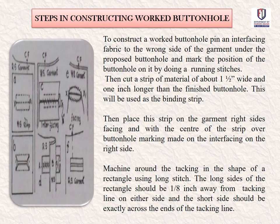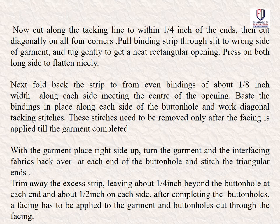To construct a bound buttonhole, first pin an interfacing fabric to the wrong side of the garment under the proposed buttonhole and mark the position with a running stitch. Cut a strip of material about 1½ inches wide and 1 inch longer than the finished buttonhole, to be used as a bias strip. Place this strip on the garment right side up, with the center of the strip covering the buttonhole marking. Machine stitch around the tacking in the shape of a rectangle using long stitches — the long sides 1/8 inch away from the tacking line, and the short sides exactly across the ends. Then cut along the tacking line to within 1/4 inch of the ends.